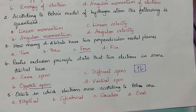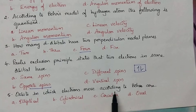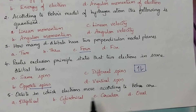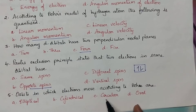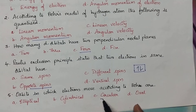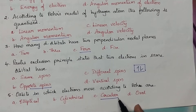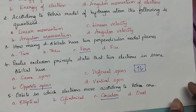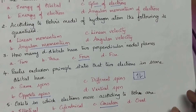Orbits in which the electrons move according to Bohr are: According to Bohr's atomic theory, the shape of the orbit is circular.